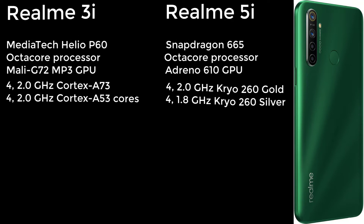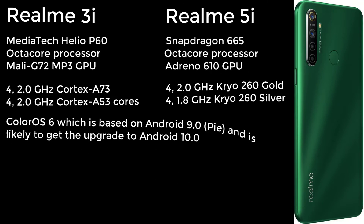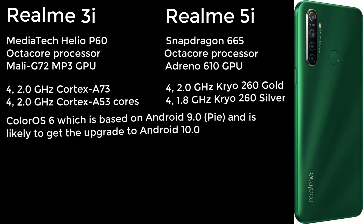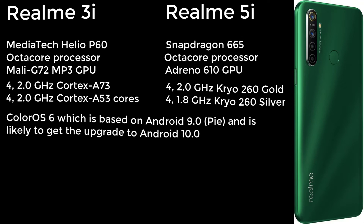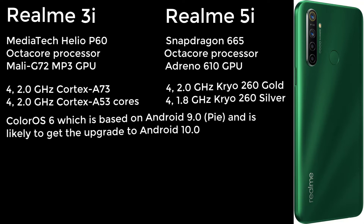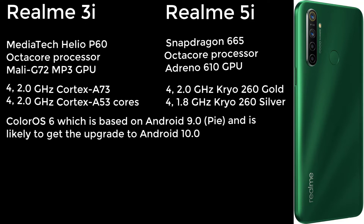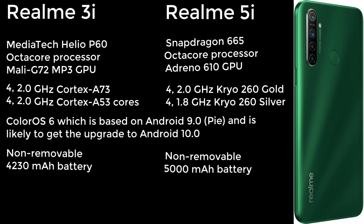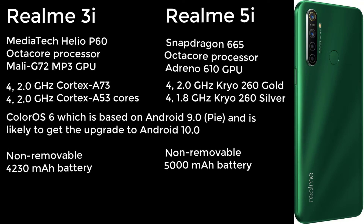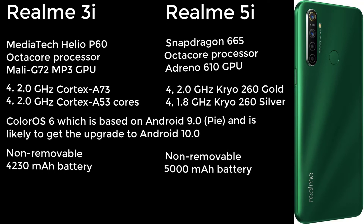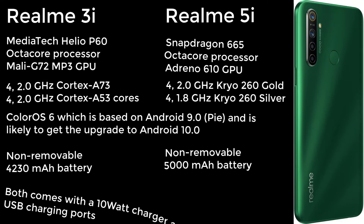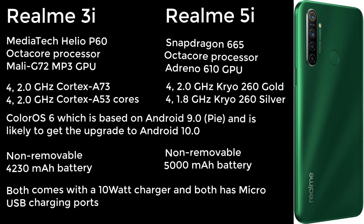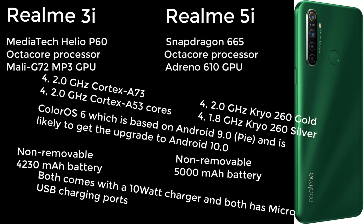On the software front, both phones come with ColorOS 6 based on Android 9.0 Pie and are likely to get the upgrade to Android 10.0. For the battery, the 3i has a non-removable 4230 mAh battery whereas the 5i has a non-removable 5000 mAh battery. Both come with a 10W charger and micro USB charging ports.